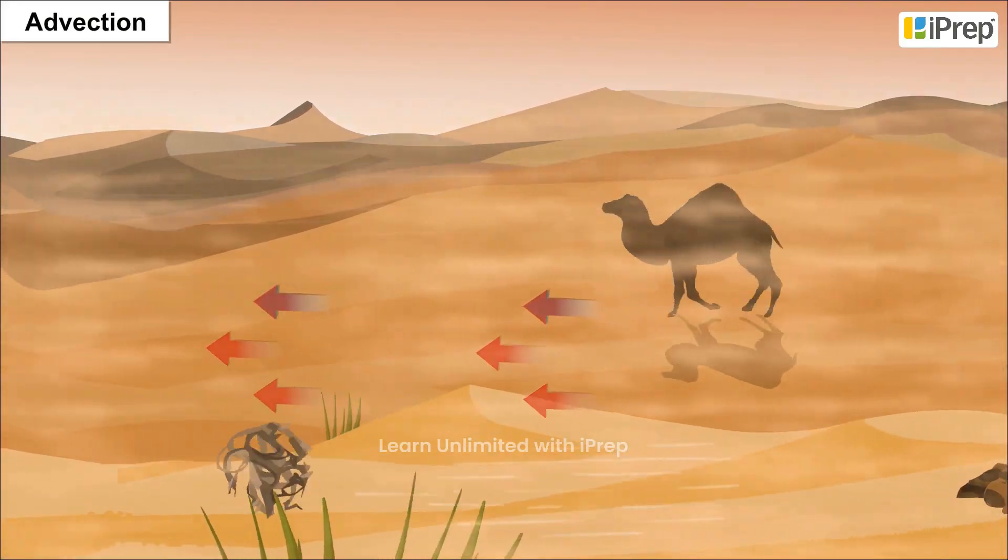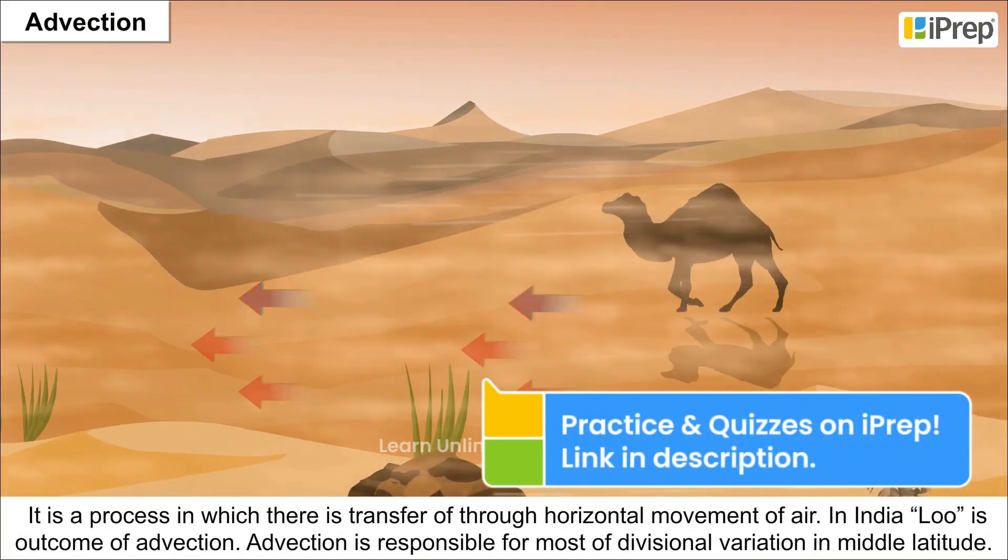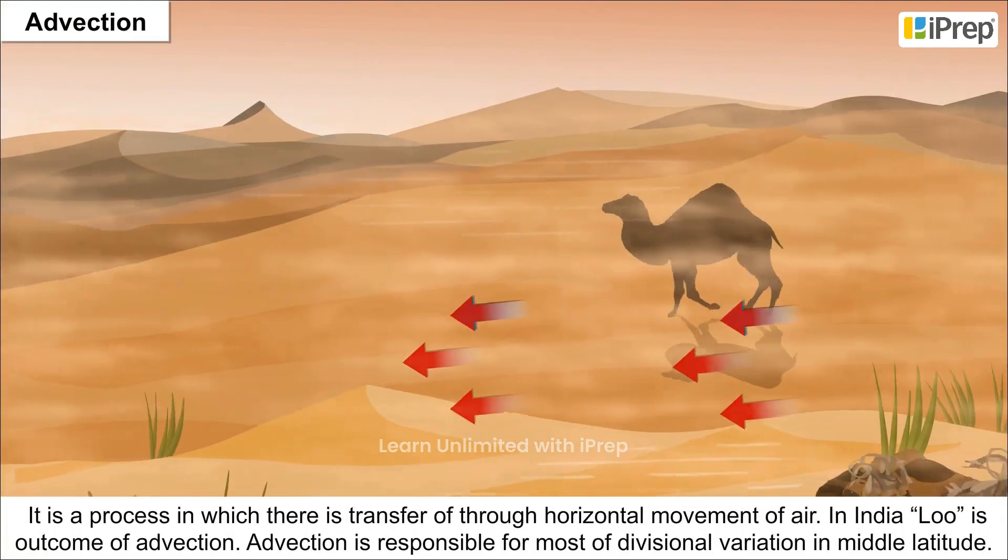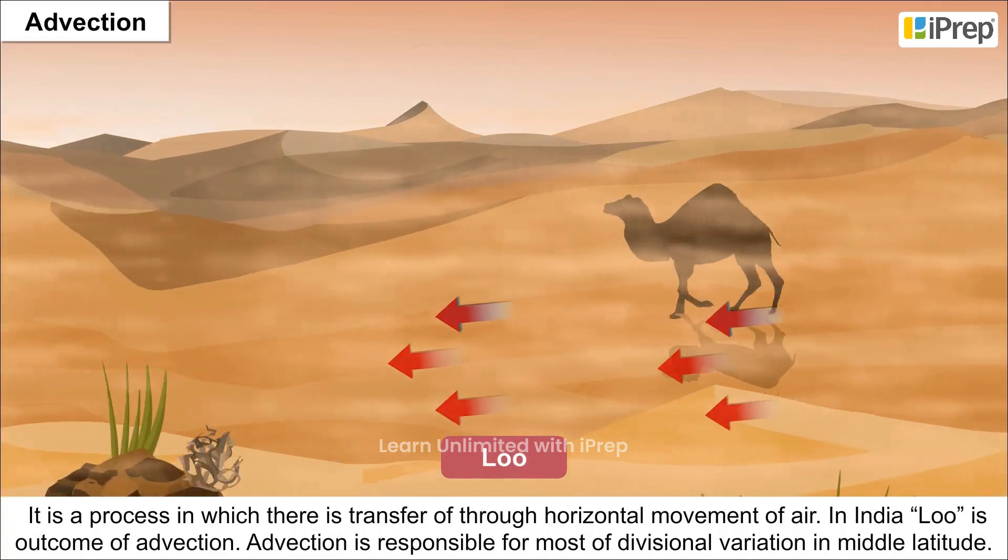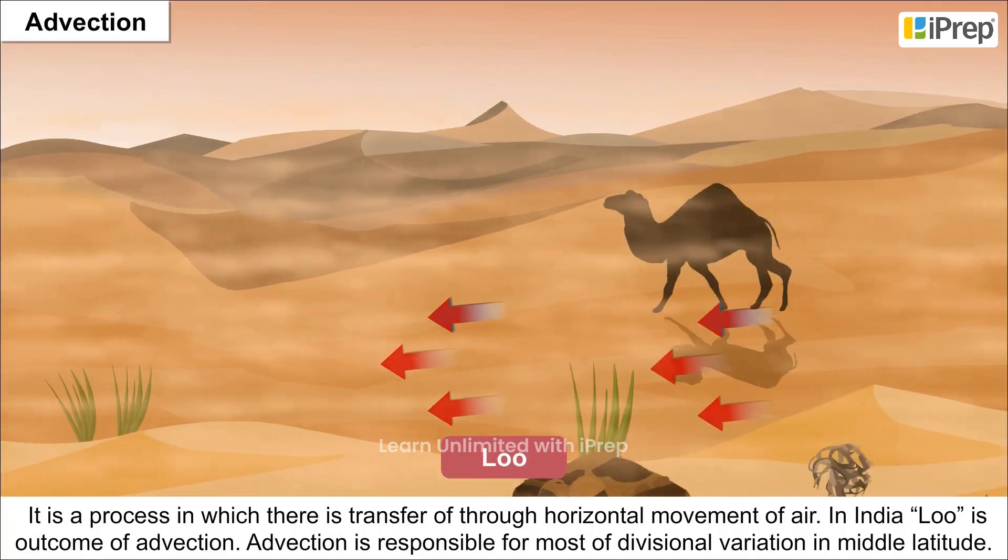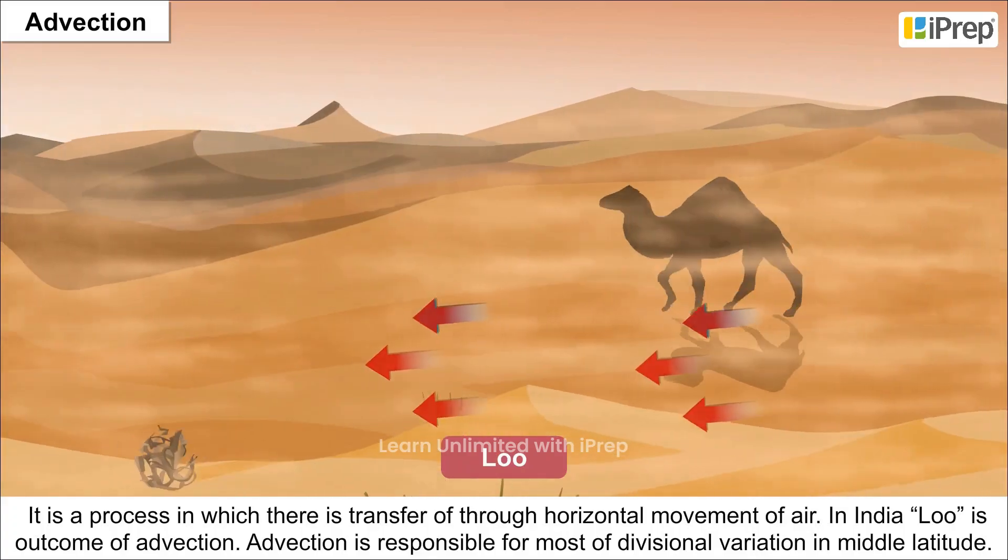Advection: It is a process in which there is transfer of heat through horizontal movement of air. In India, Loo is an outcome of advection. Advection is responsible for most divisional variation in middle latitudes.